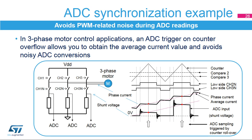This slide presents an example of PWM synchronized ADC trigger. For three-phase motor control, it is mandatory to have ADC reading synchronized with the PWM generated for controlling the power stage. This allows extraction of the average value out of the current waveform ripple and ensures the ADC reading is done at an adequate distance from the ringing due to the power switches.